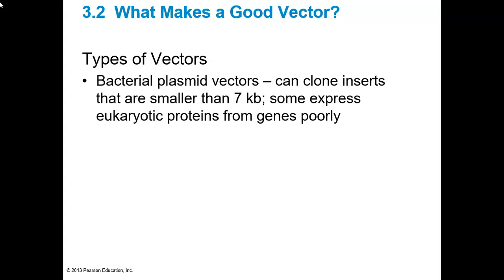With bacterial plasmid vectors, when you use a bacterial host, you have to bear in mind that bacterial hosts cannot do post-translational modifications and are not going to express eukaryotic proteins properly. You can express some eukaryotic proteins like insulin, but they will require a lot of post-processing. Insulin actually has to be chemically folded after it's produced in bacterial cells, which can be quite an onerous process and add expense to your bioprocess.